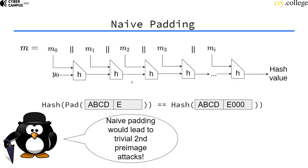The problem here is that we could also just hash the value "a b c d e" followed by zero bytes — this wouldn't need padding — and then we would have a second preimage: we would have found the same hash value for a different message.